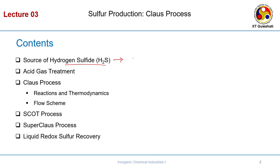Elemental sulphur is S-n, where n can go from 1 to 8, depending upon whether the sulphur is in liquid, solid, or vapor form. The prime focus of this lecture is how to produce this elemental sulphur from the source.